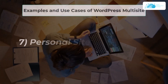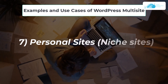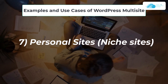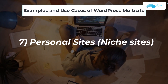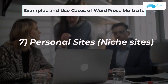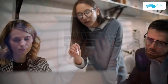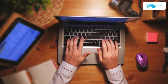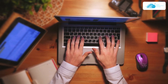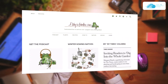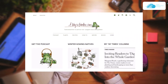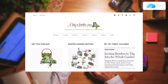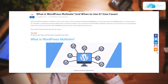Lastly, at number seven, we have personal sites or blogs, which are known as niche sites. Though large organizations often use the multi-site features, it is not limited to companies. If you have a personal blog covering different areas and different micro audiences, then you can adopt the multi-site feature. An example for this can be awaytogarden.com.